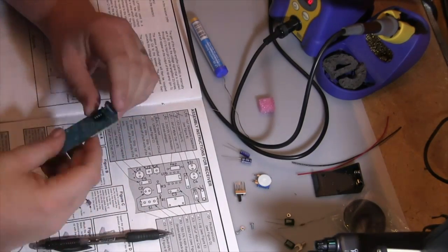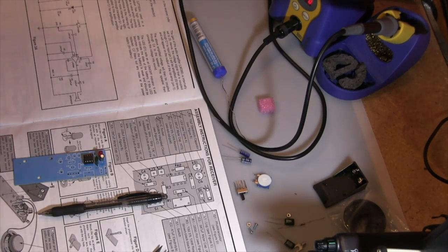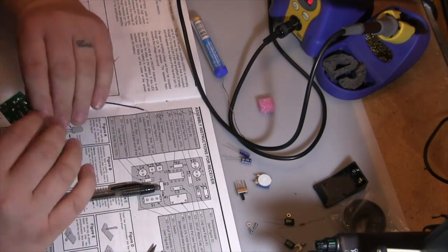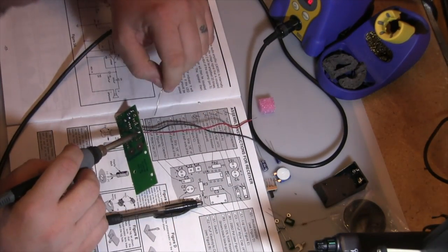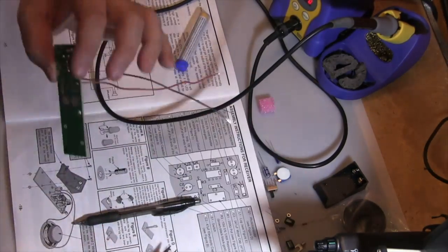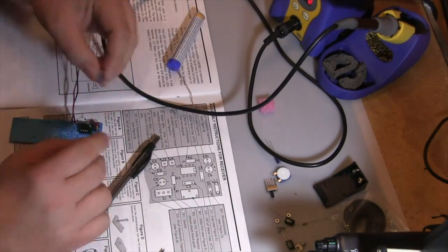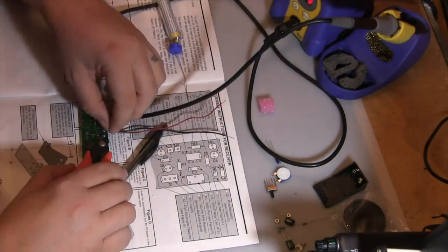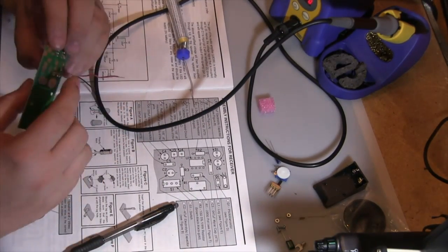I'm inserting the op amp. These are the speaker leads. The speaker leads did not come pre-stripped, so you have to strip them yourself. Following a general rule of thumb with red being positive and black being negative, you want to insert them in the correct polarity hole. All the electrolytic capacitors have to be installed in the correct polarity as well.